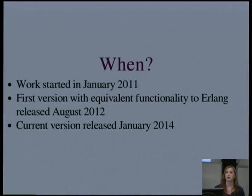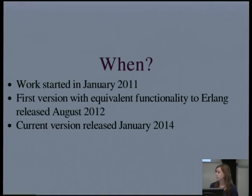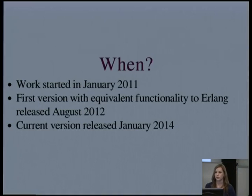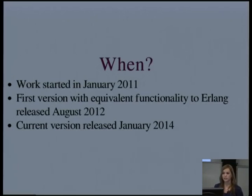Elixir is still a very young programming language. Work started on it just three years ago, and it was only in August 2012 when the first version came out with equivalent functionality to Erlang, so you could do everything in Elixir that you can do in Erlang. The latest version, which is 0.12.1, was released just a few days ago, so work is still active and ongoing. There's still a few more things to go before a 1.0 will be released, and that is waiting on Erlang 17 being released, so maybe still a little way off, but getting quite close.